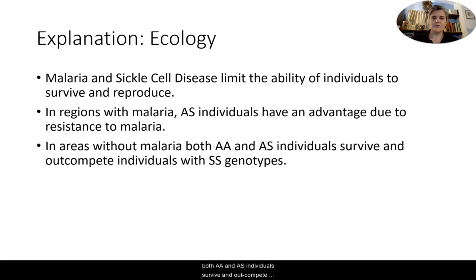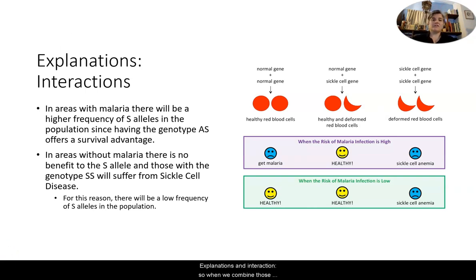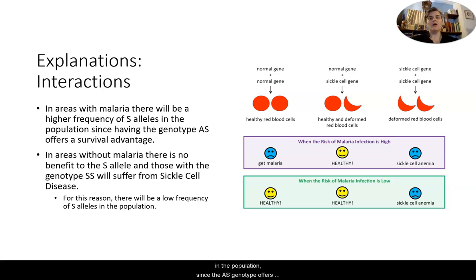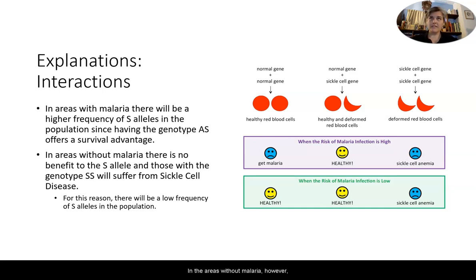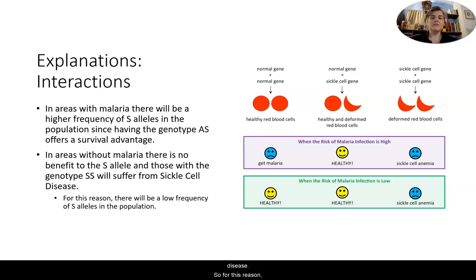In areas without malaria, however, both AA and AS individuals survive and out-compete individuals with the SS genotype. In areas with malaria, there's going to be a higher frequency of S alleles in the population since the AS genotype offers a survival advantage — if you have sickle cell trait, you have a better likelihood of surviving malaria. In areas without malaria, there's no benefit to the S allele, and those with the SS genotype will suffer from sickle cell disease. For this reason, there's going to be a lower frequency of the S allele in the population.